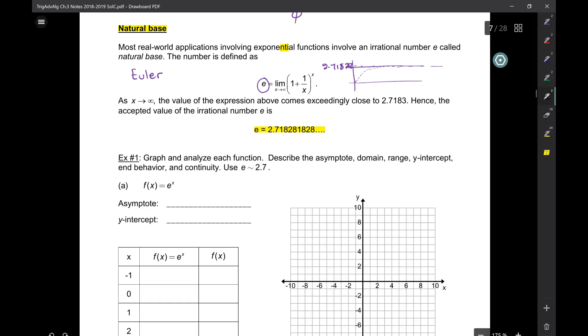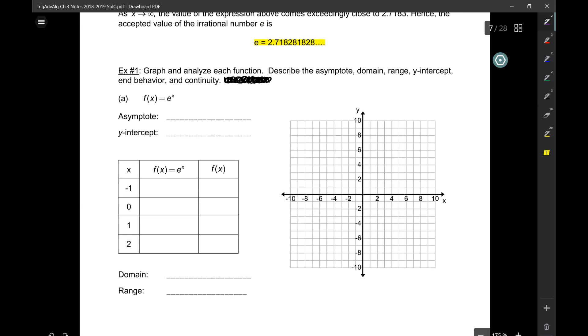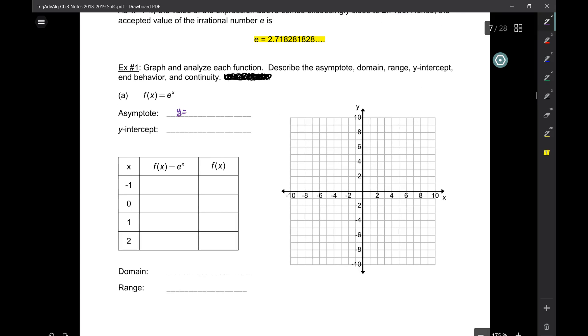Here we're going to graph e to the x. One thing I want to change here in example one: it says graph and analyze the function, we're going to do asymptotes, y-intercept and so on, but this sentence where it says use e approximately whatever, erase that. So it's e to the x. Our asymptote, just like yesterday, is the default y equals zero. The y-intercept is e to the power of zero, and what's anything to the power of zero? One. So the y-intercept is zero comma one. Let's plot that.